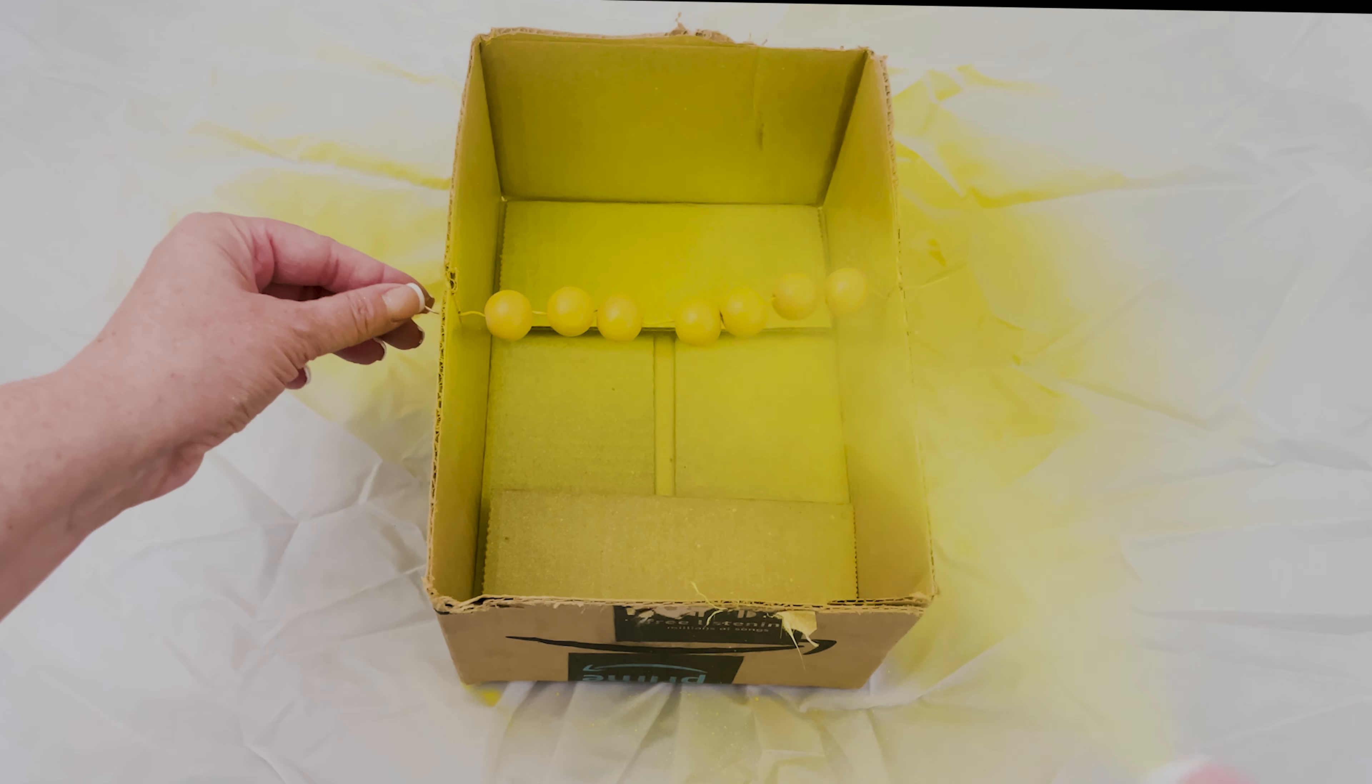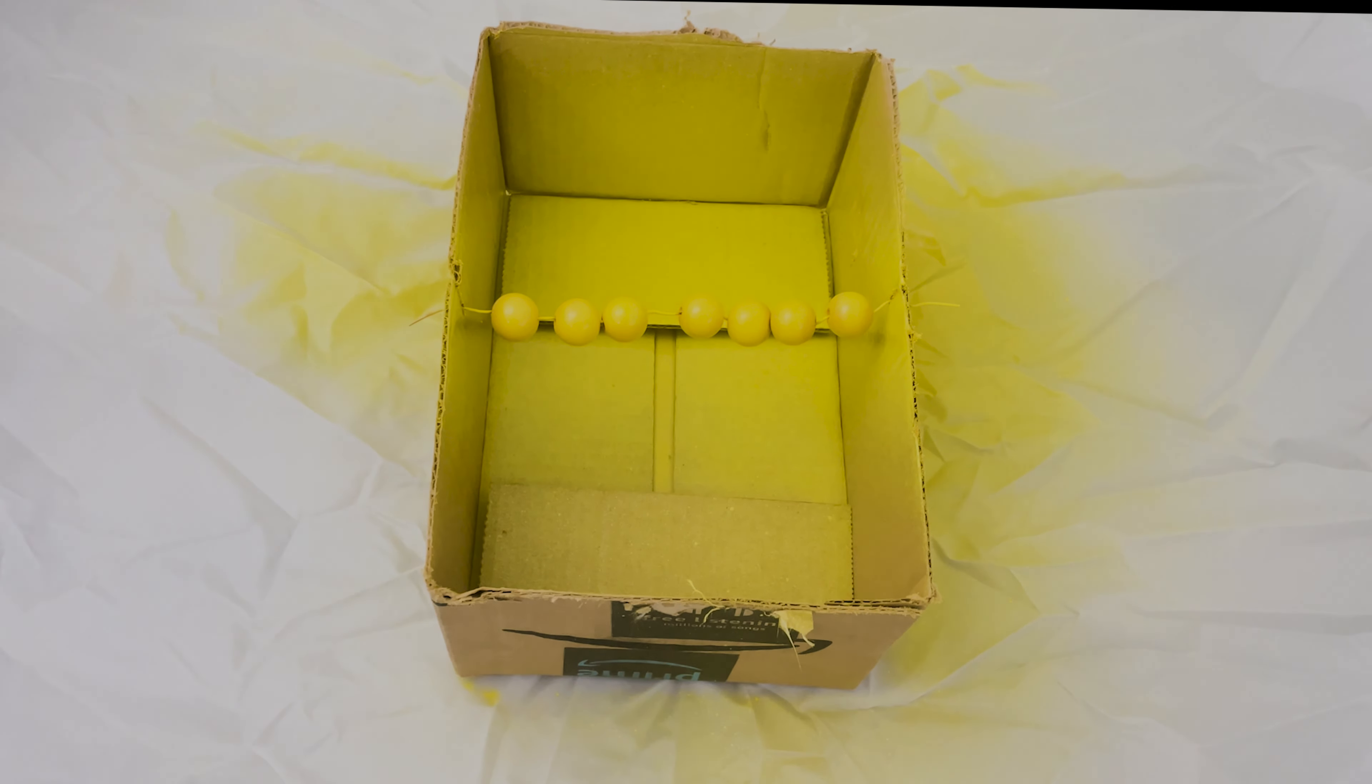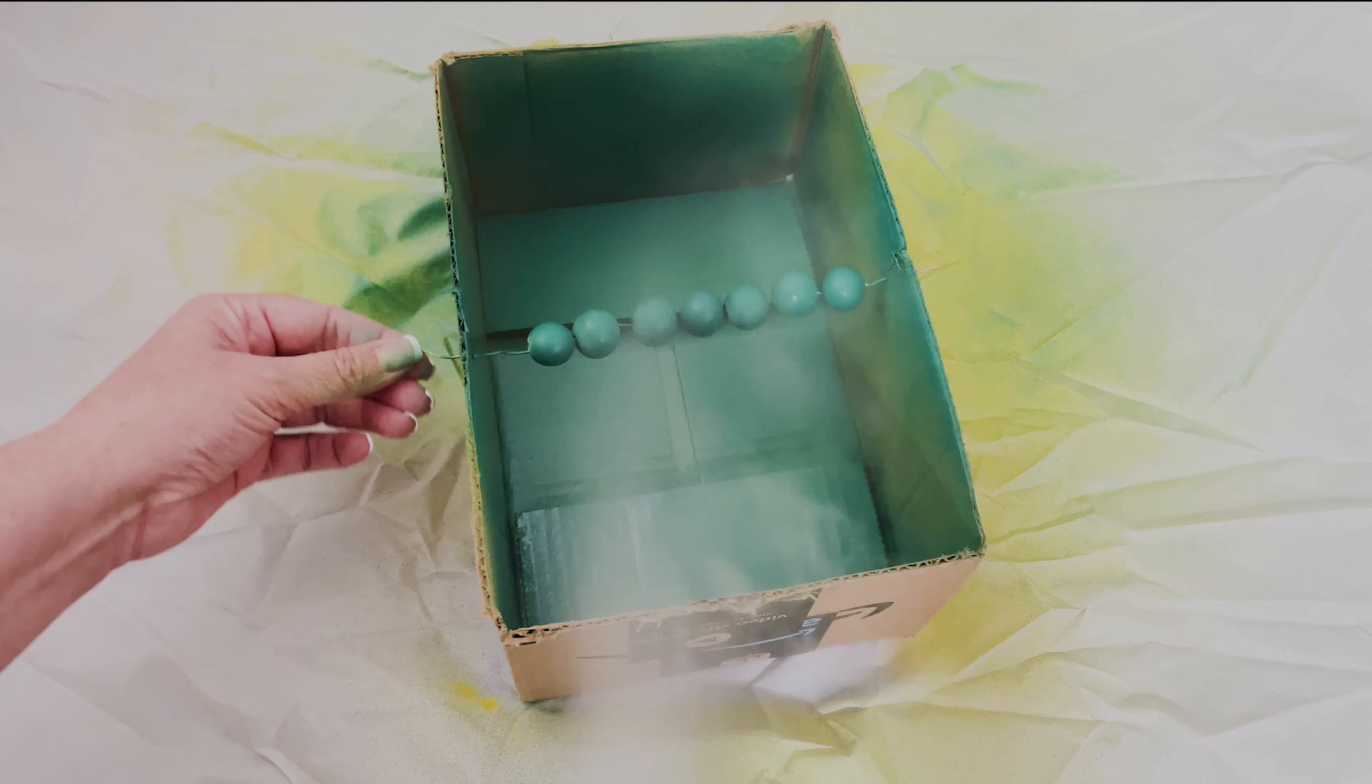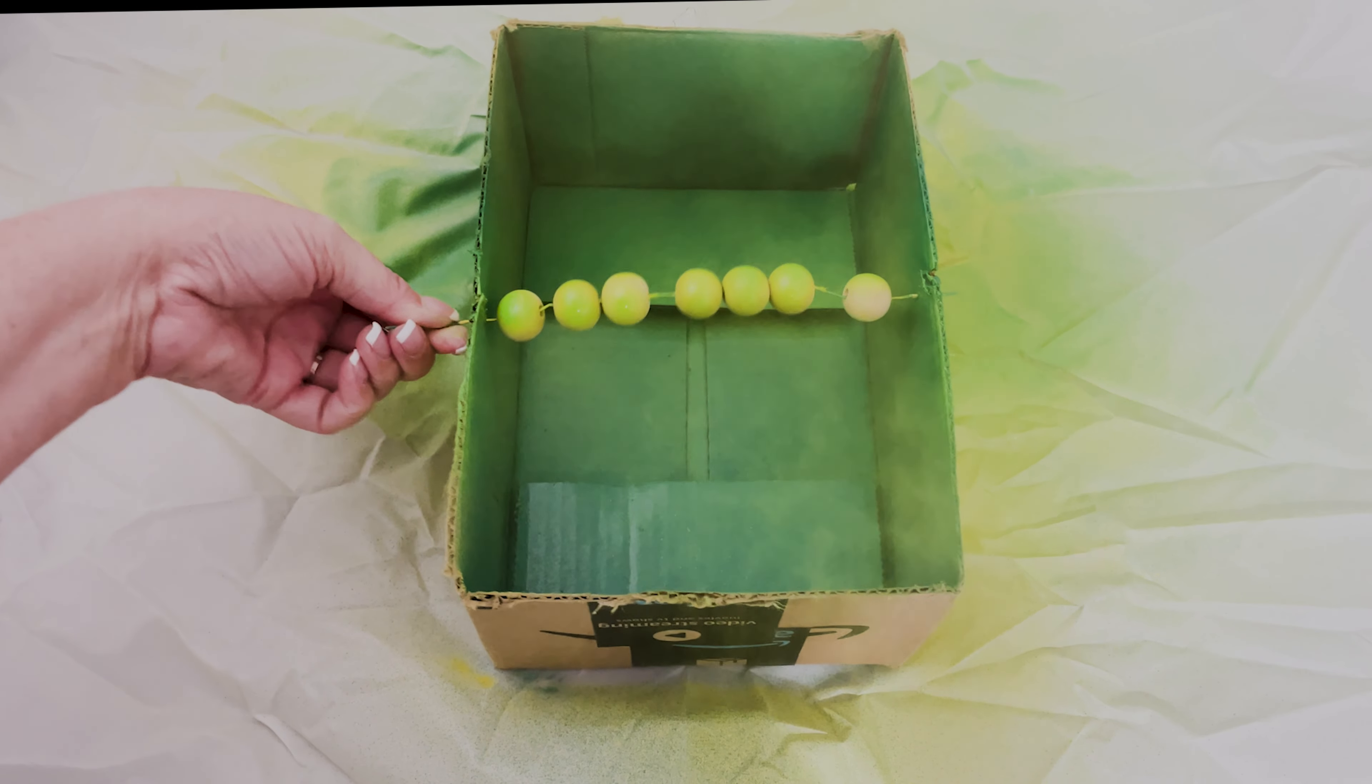Once dried, we're going to give another light coat of the yellow spray paint to all sides. Once our second coat of yellow spray paint is dry, we will go in with our clear sealer. Then I'm going to repeat those steps for my other colors, starting with the dark green, and then the light green.